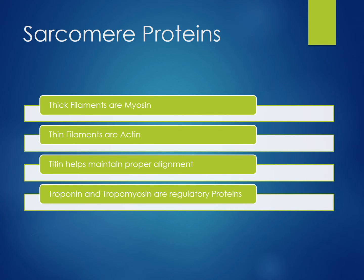A sarcomere is made up of several proteins that work together to achieve muscle contraction. Thick filaments are made up of myosin. Laterally to the thick filaments are thin filaments made up of actin. When muscle contraction occurs, the thin filaments will slide inward and overlap the thick filaments.